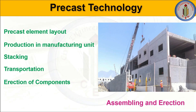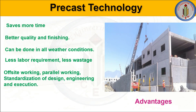Let's look into the assembling and erection of precast elements. Precast construction includes various structural components which are standardized and manufactured in plants at a remote location, then transported to the site for assembly. The overall process involves: providing the precast element layout, producing elements in the manufacturing unit, stacking, transportation, and finally erection of the components at site.